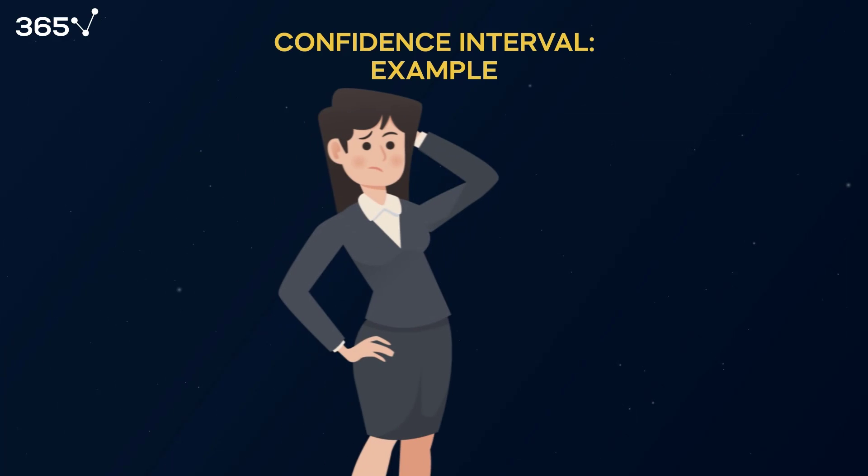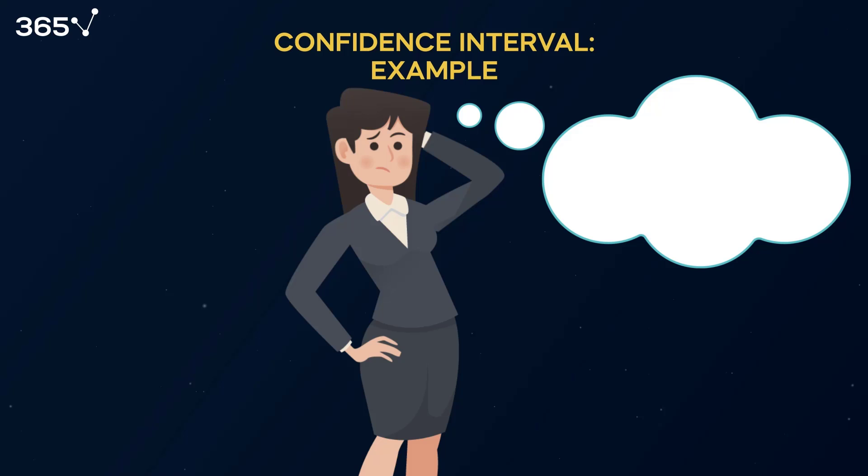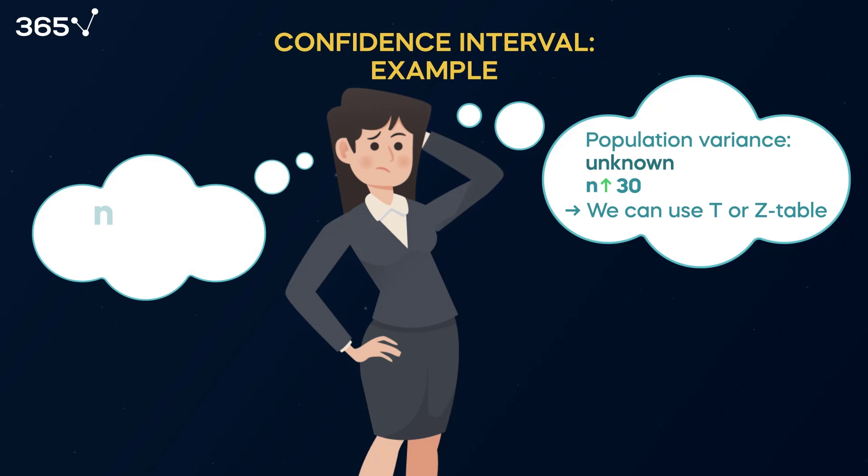In this case, our population variance and standard deviation are unknown. We used the t statistic. But for sufficiently large samples, even if the population variance is unknown, we can use the z-table. The result after 30 observations would be very close. The rule of thumb is always to use the t-table with less than 30 observations. If your observations are more than 30, you can use either the t- or z-table.